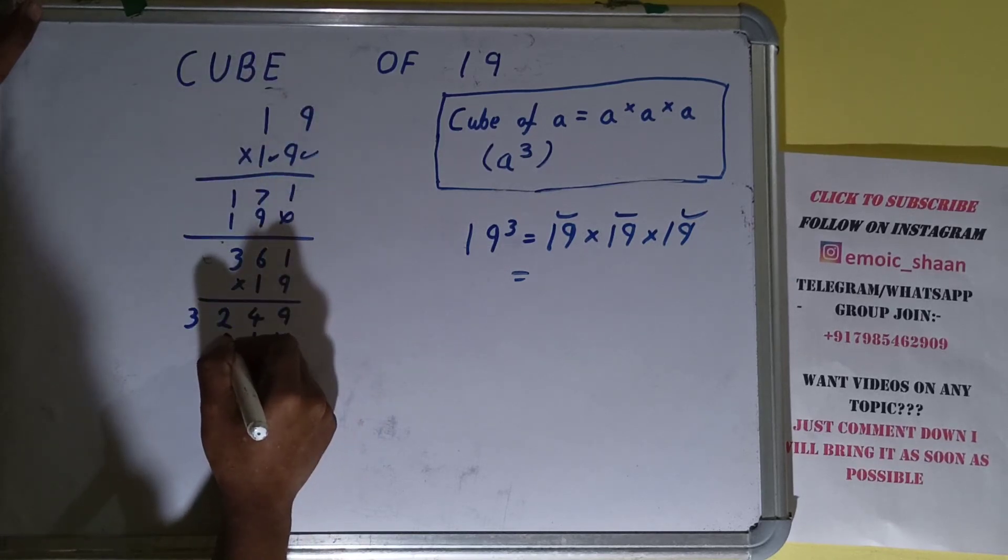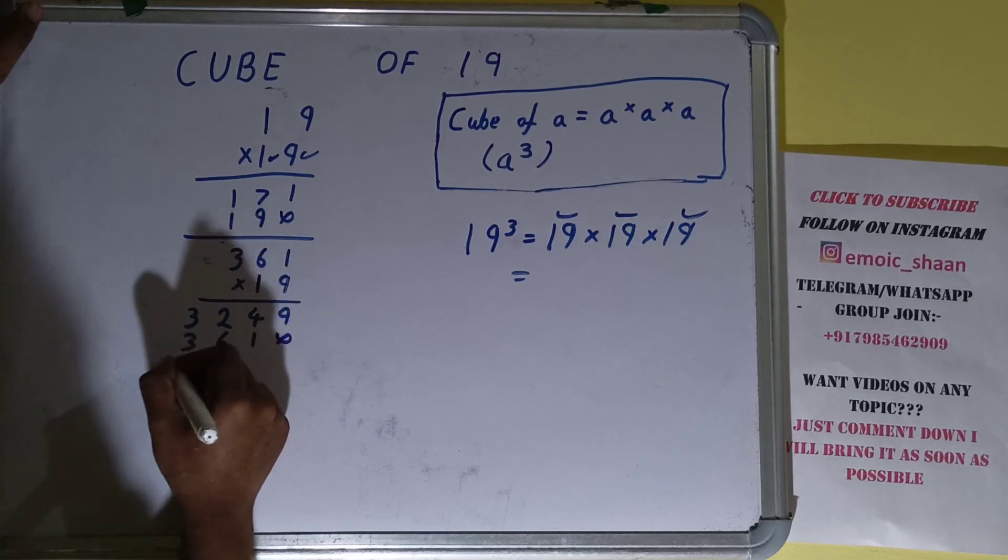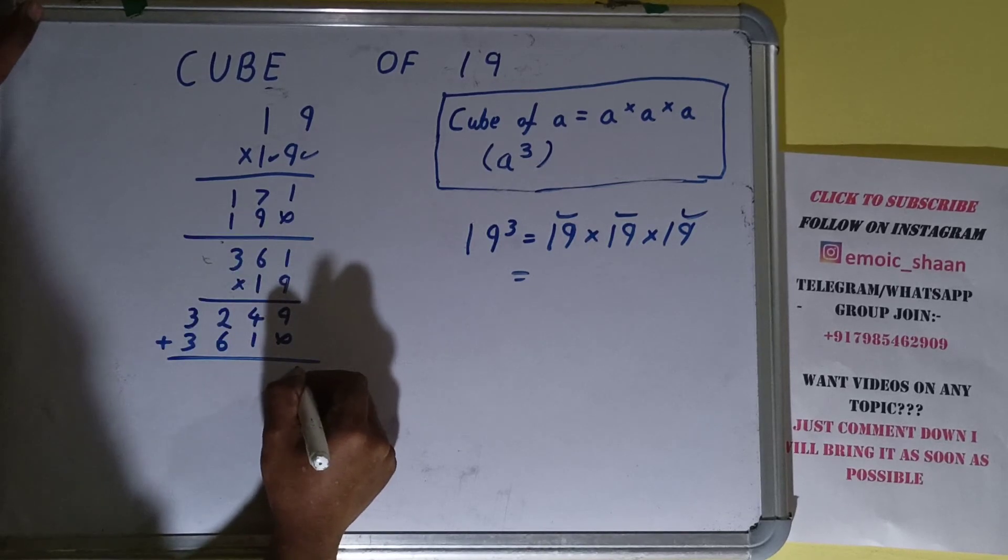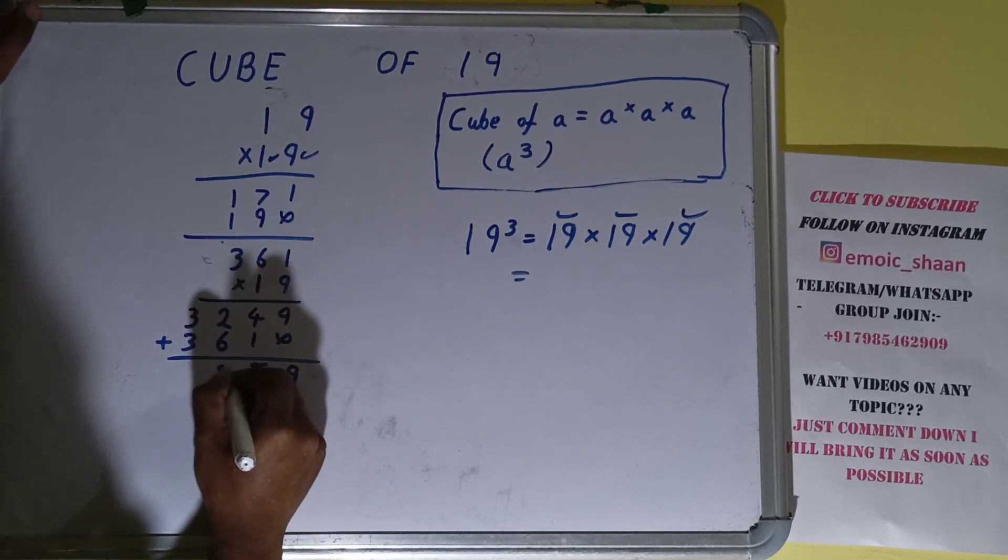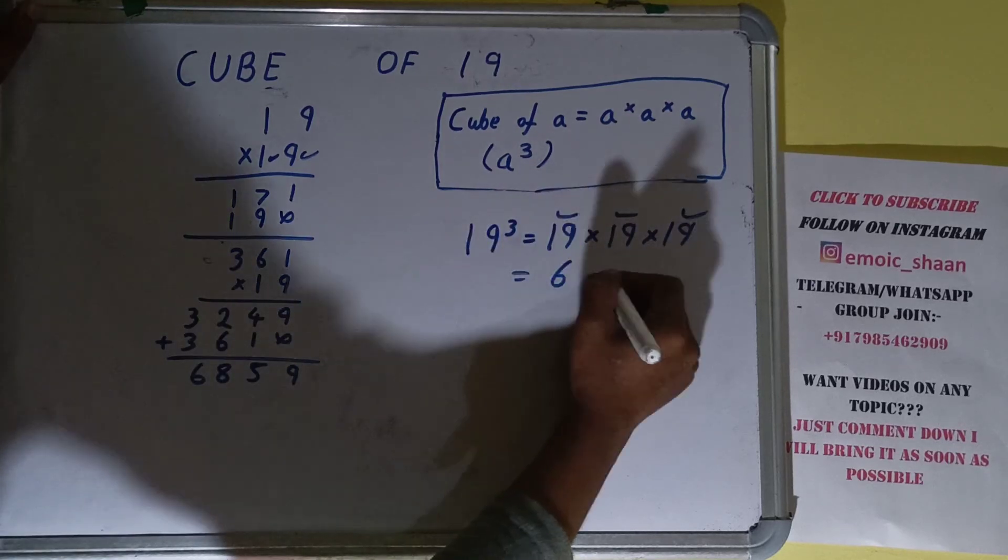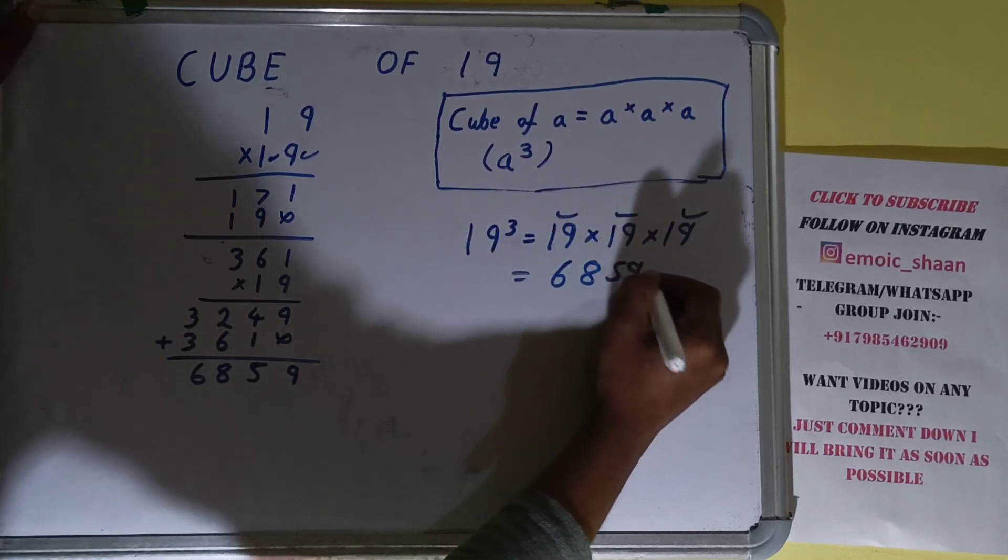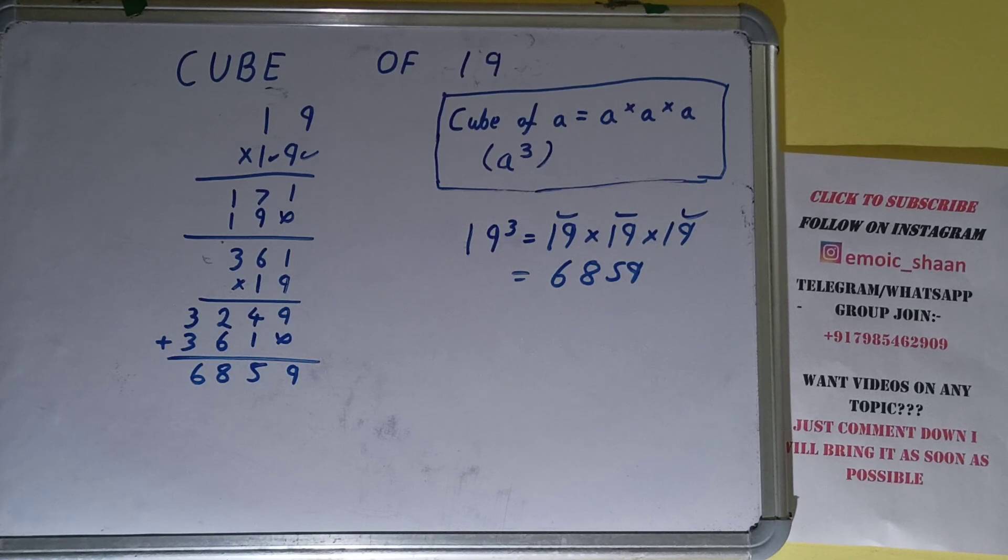Now this 1: 1 times 1 is 1, 1 times 6 is 6, 1 times 3 is 3. Just add them: 9, 5, 8, 6. The answer will be 6859. That will be the cube for the number 19.